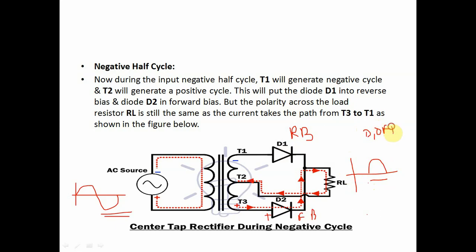During the negative half cycle, D1 is in OFF condition and diode D2 is in ON condition. During the negative half cycle, T3 generates a positive cycle and T1 generates a negative cycle. This puts D1 into reverse bias and D2 into forward bias, but the polarity across the load resistance RL remains the same, as current takes the path from T3 to T1.